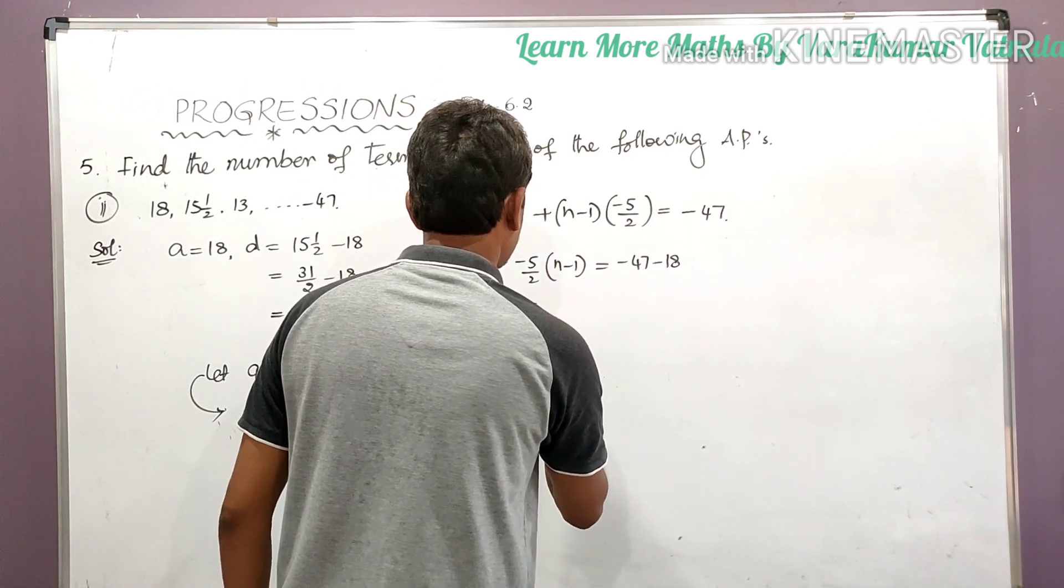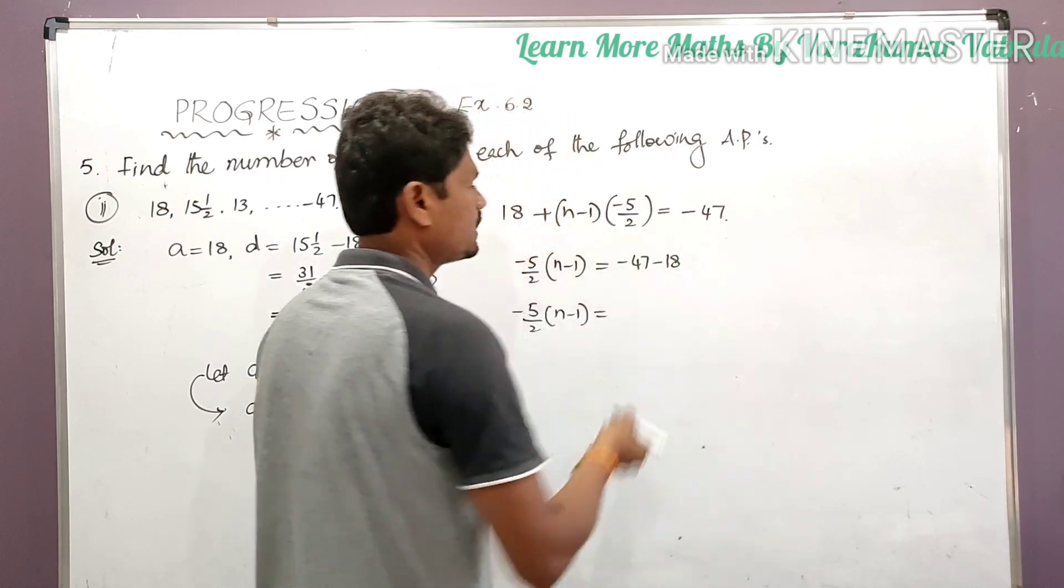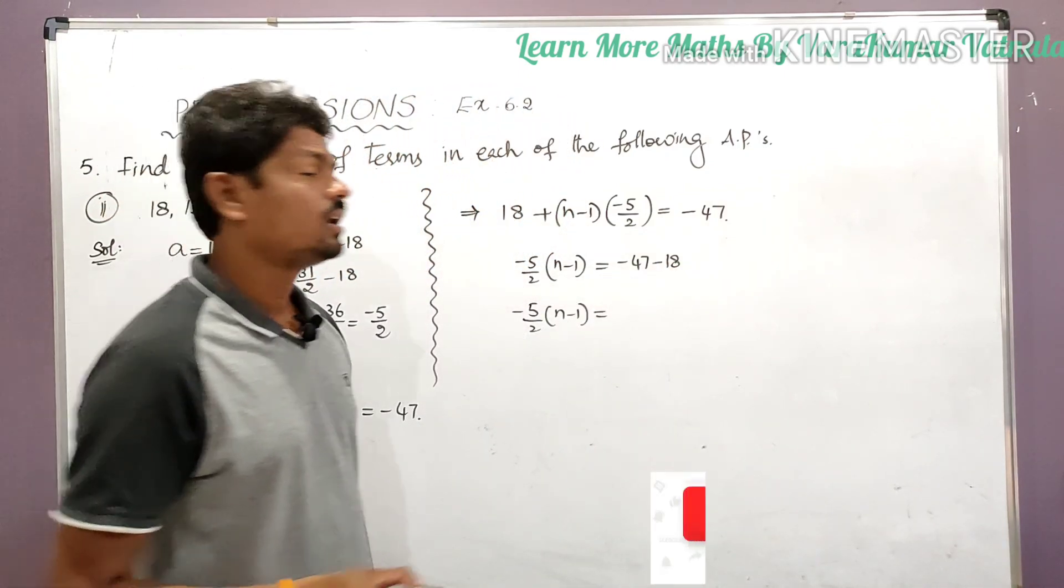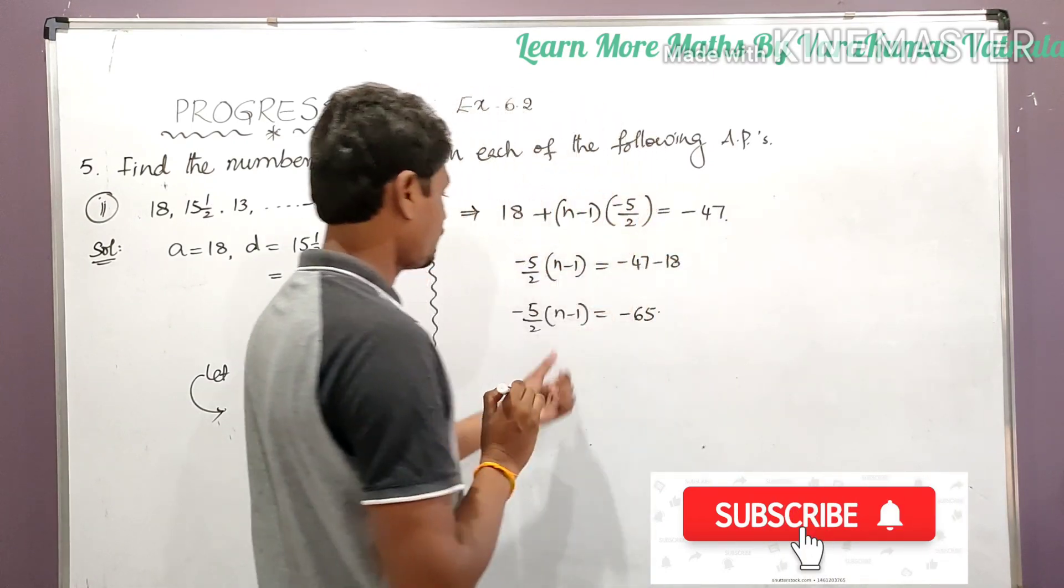So write as usual this term, minus 5/2 into (n minus 1) is equal to minus 47 minus 18, we can get minus 65, minus 65.